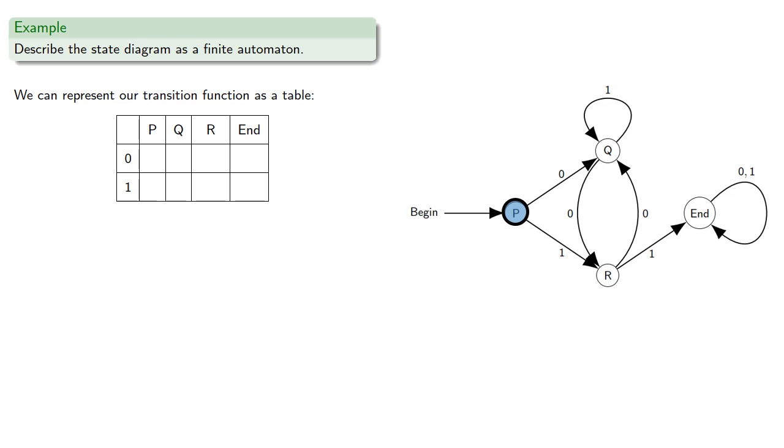So if you're at P, then symbol 0 will send you to Q, while symbol 1 will send you to R. If you're at Q, then 0 sends you to R, and 1 sends you to Q.